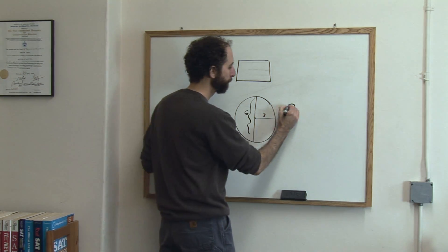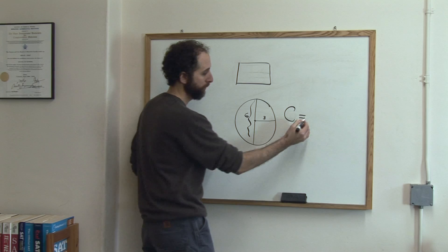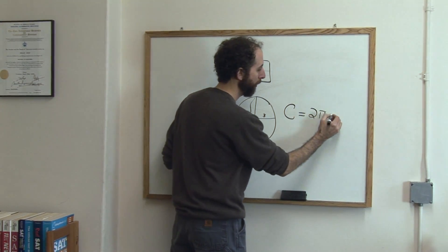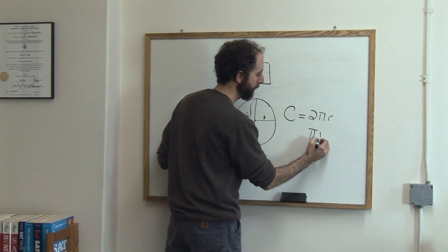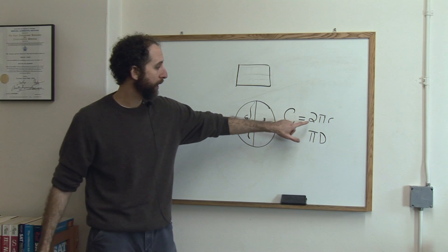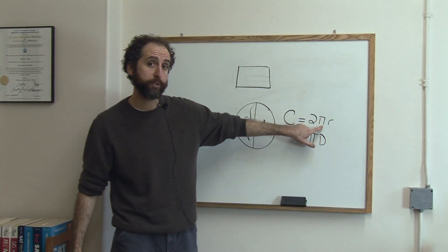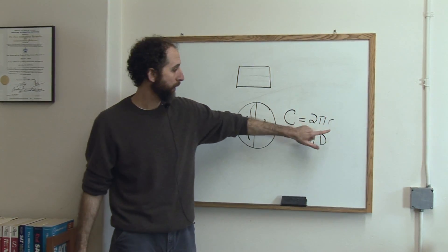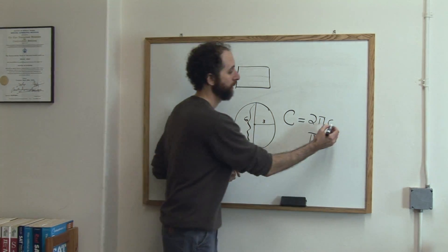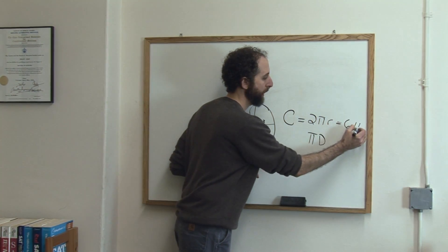And the circumference is just 2πr or πd. So 2πr means 2 times π, which is 3.14 rounded, times the radius, in this case 3. So we'd say it's 6π.